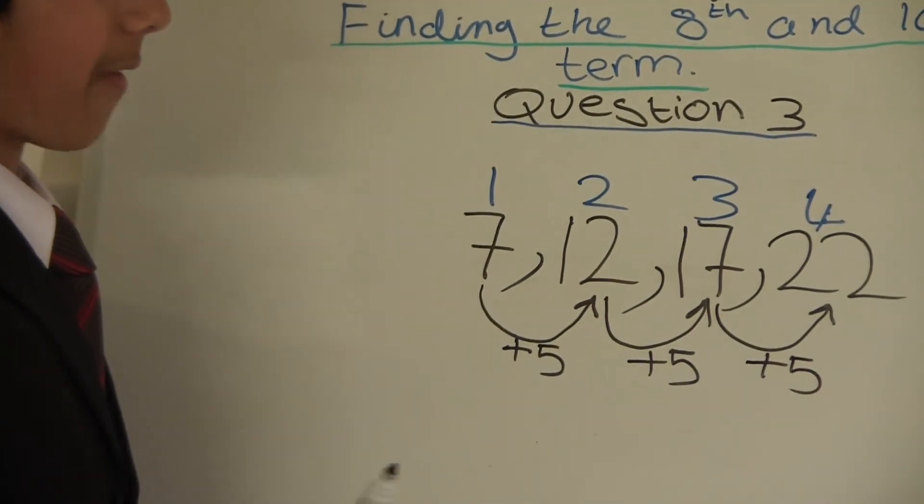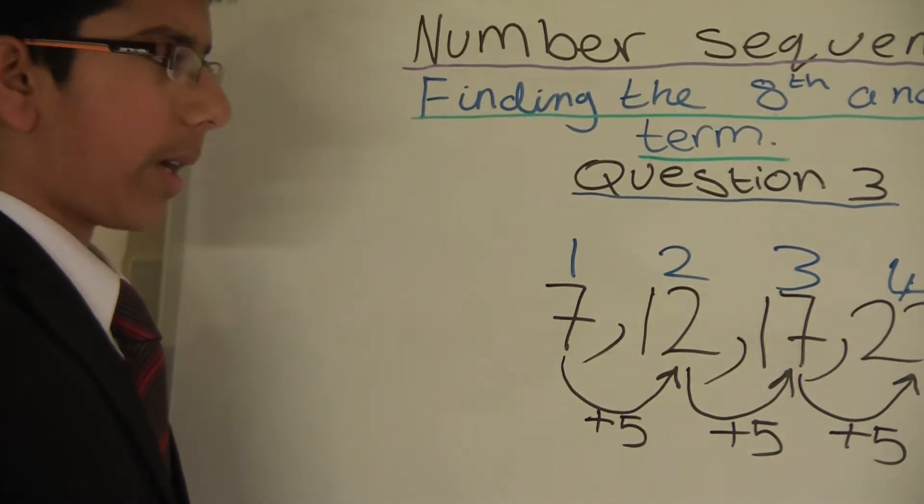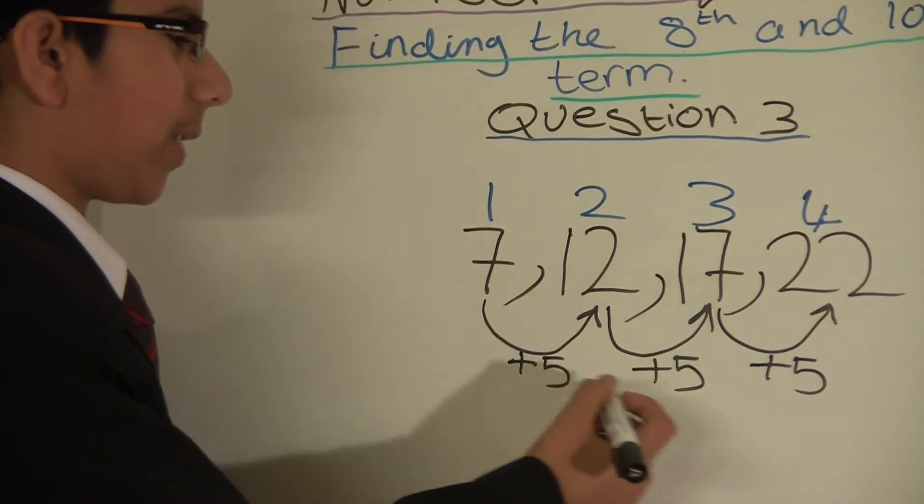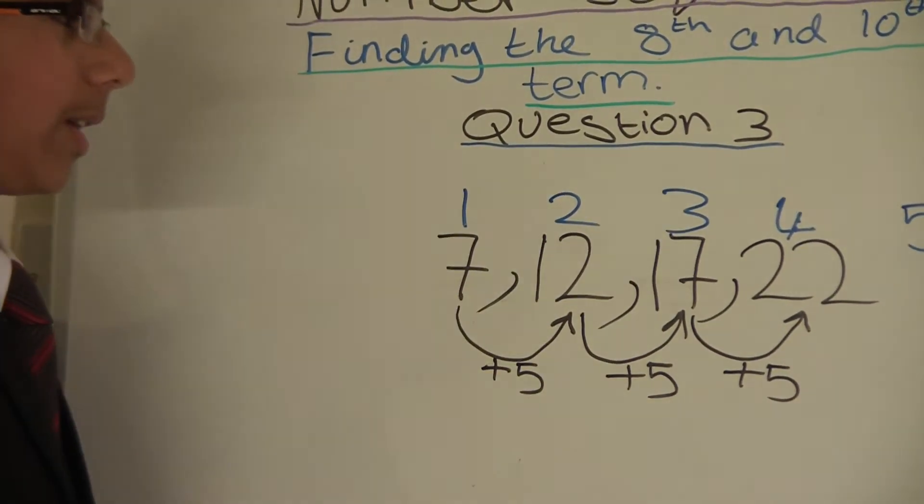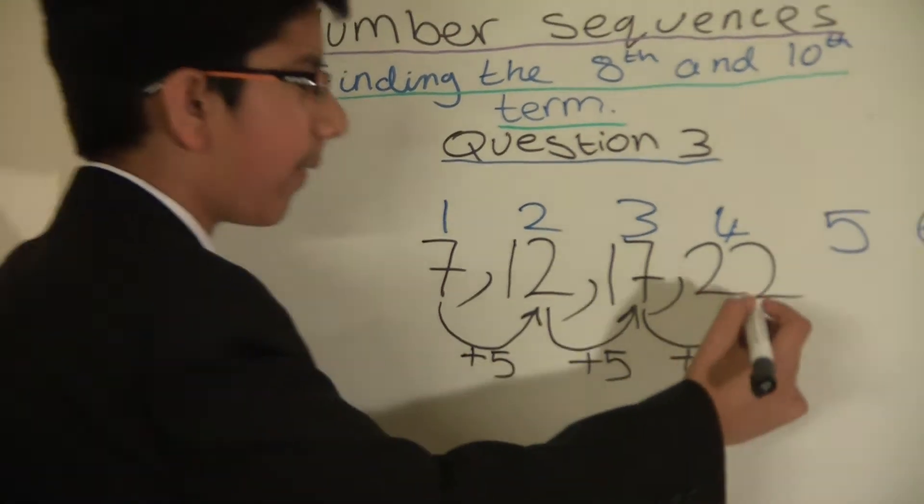First of all we have to work out the 5th, 6th, and 7th position, then we can get to 8. So we have to do the same: plus 5 each time onto each position. So let's do that. 22 plus 5 equals 27.